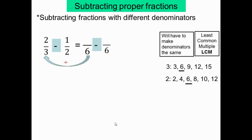On trouve les numérateurs: 6 divisé par 3 égal 2 fois 2 égal 4 en haut. 6 divisé par 2 égal 3 fois 1 égal 3 en haut. Maintenant on a le même dénominateur. Le dénominateur ne change pas. On soustrait les numérateurs: 4 moins 3 égal 1. La réponse est 1 sur 6.